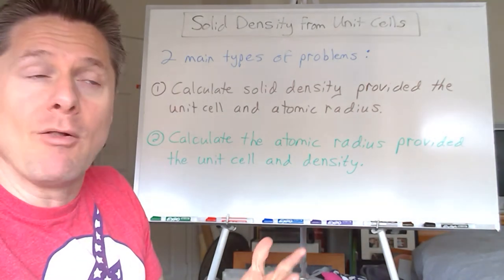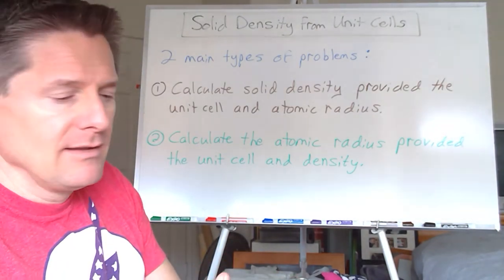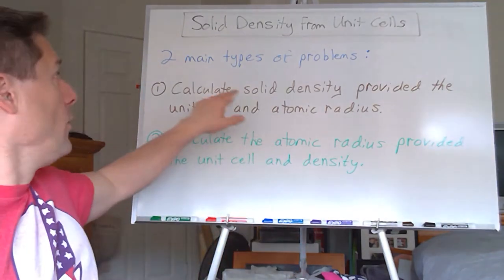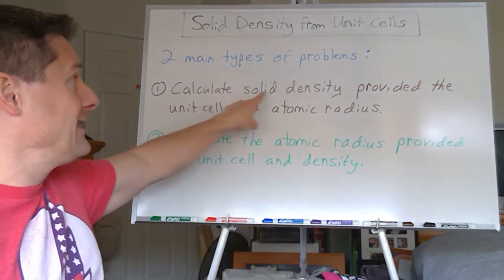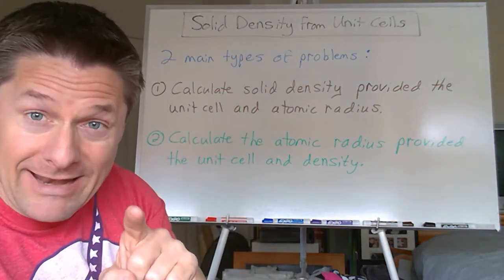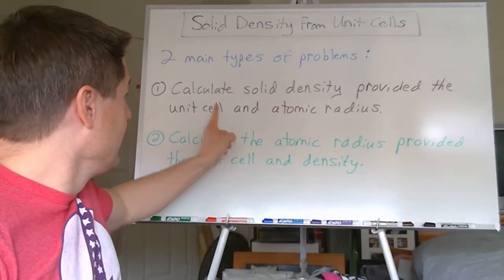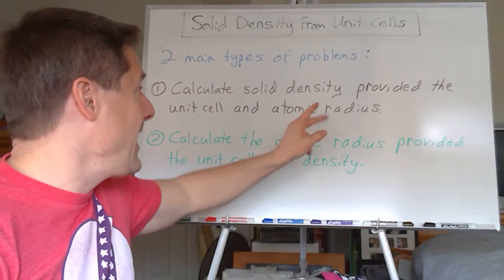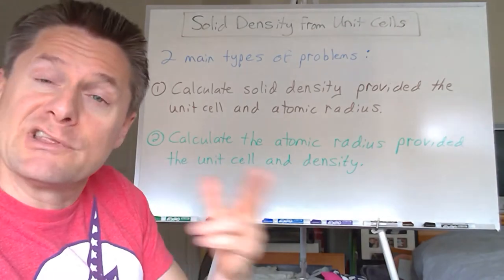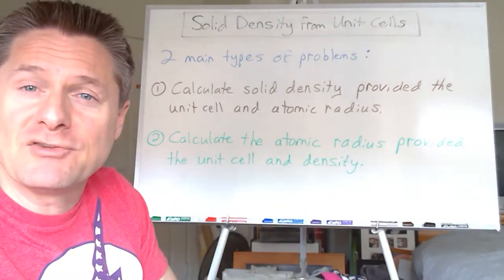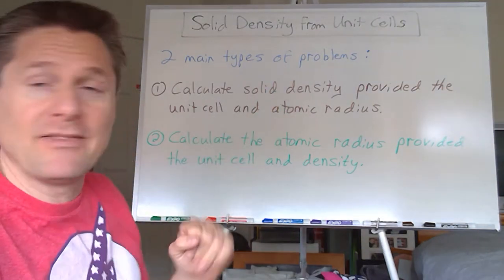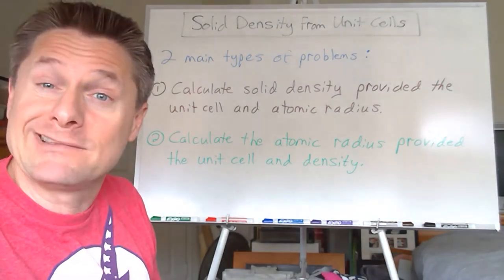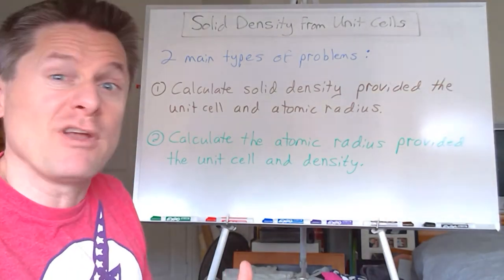Or we could twist it around backwards and calculate the atomic radius. So here are the two types of problems we're going to be running into for solids. Given unit cell information — is it FCC, HCP, body-centered cubic, those kinds of things — one, calculate the density, provided what unit cell it is and the atomic radius, usually from x-ray diffraction data. Given those, we can actually calculate the density, typically in grams per centimeters cubed.